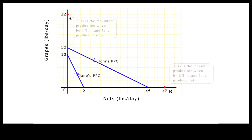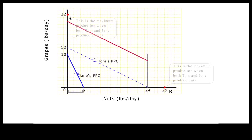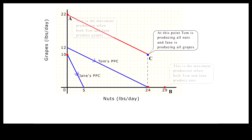Starting from the vertical intercept A, where only grapes are produced, if we want to have some nuts, the producer that has the comparative advantage in producing nuts — Tom — should be the one to do so. So the combined production function should move along Tom's production function until Tom completely specializes in the production of nuts at point C.